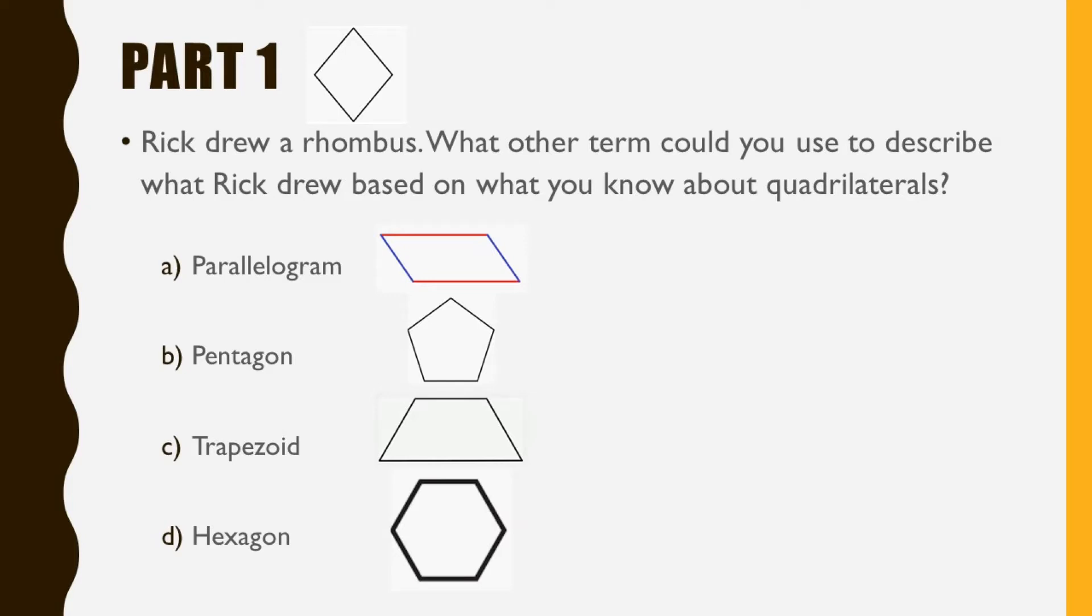Part 1. Rick drew a rhombus. What other term could you use to describe what Rick drew based on what you know about quadrilaterals? A. Parallelogram.